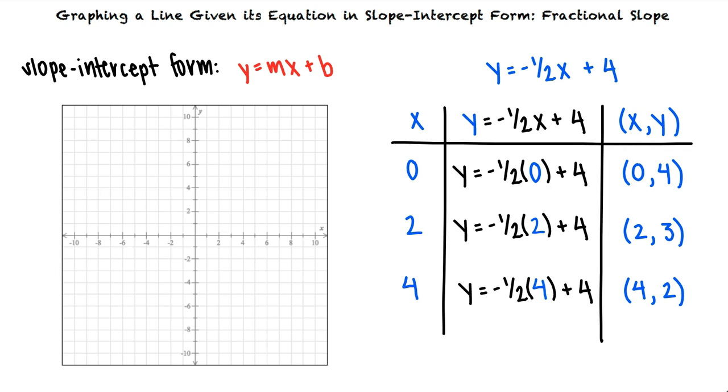I thought we only needed 2 points to graph a line. Why did we evaluate our equation for 3 x values? Doing this allows us to check our work. If the 3 points are not on a line, then we made an error finding the points.